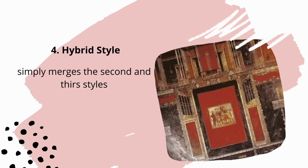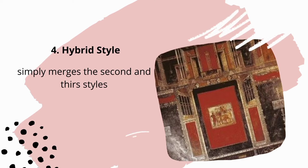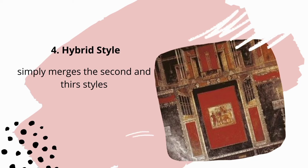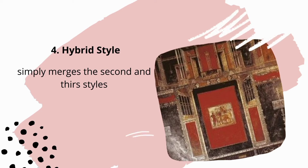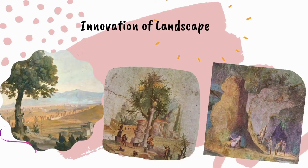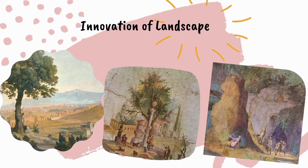The fourth style, termed the hybrid style, simply merges the second and third styles. Deep perspective and three-dimensional architecture are merged with the rectangular tapestries and framed paintings. The main innovation of Roman painting compared to Greek art was the development of landscapes, particularly incorporating techniques of perspective.